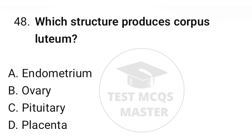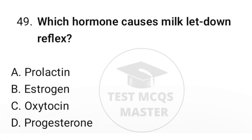Question number forty-eight: which structure produces the corpus luteum? The correct option is B, ovary. Question number forty-nine: which hormone causes the milk let-down reflex? The correct option is C, oxytocin.